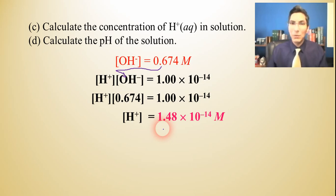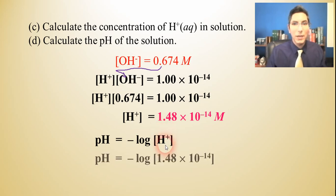Now, if we know the hydrogen ion concentration, we can calculate the pH pretty easily. Just take negative log of H+. When we key that into our calculator, we find that the pH is about 13.83. So this is not acidic at all. This is highly basic. But that makes sense because this is calcium hydroxide, a very basic solution. It's a strong base, as we learned earlier in this lesson.